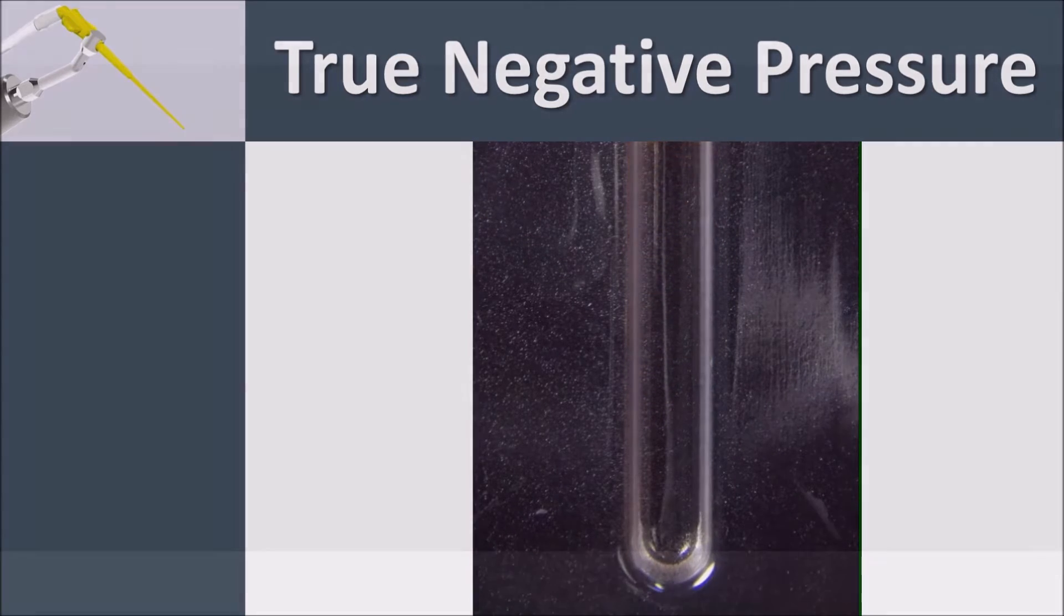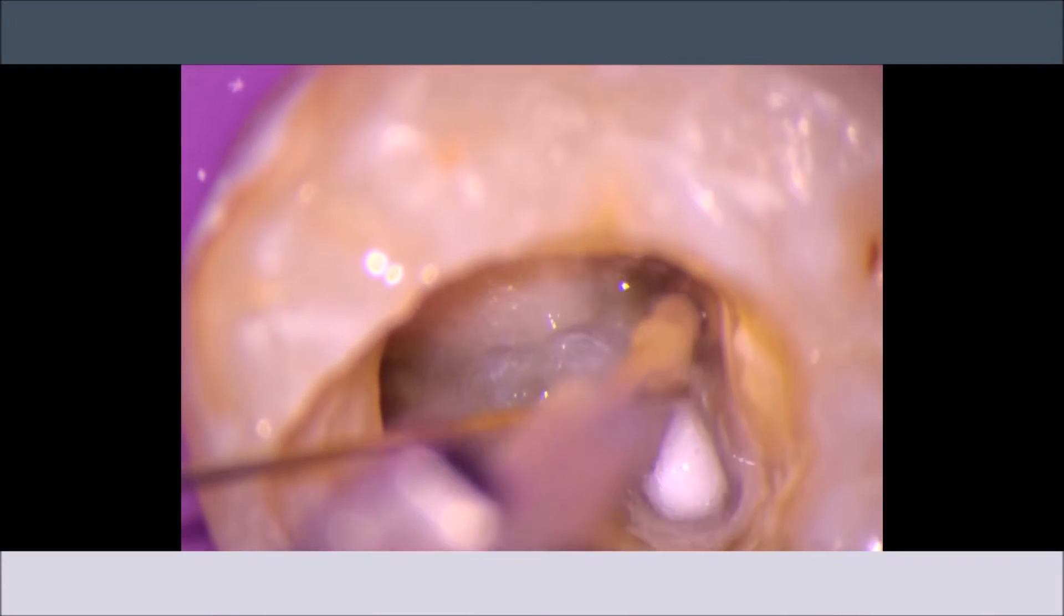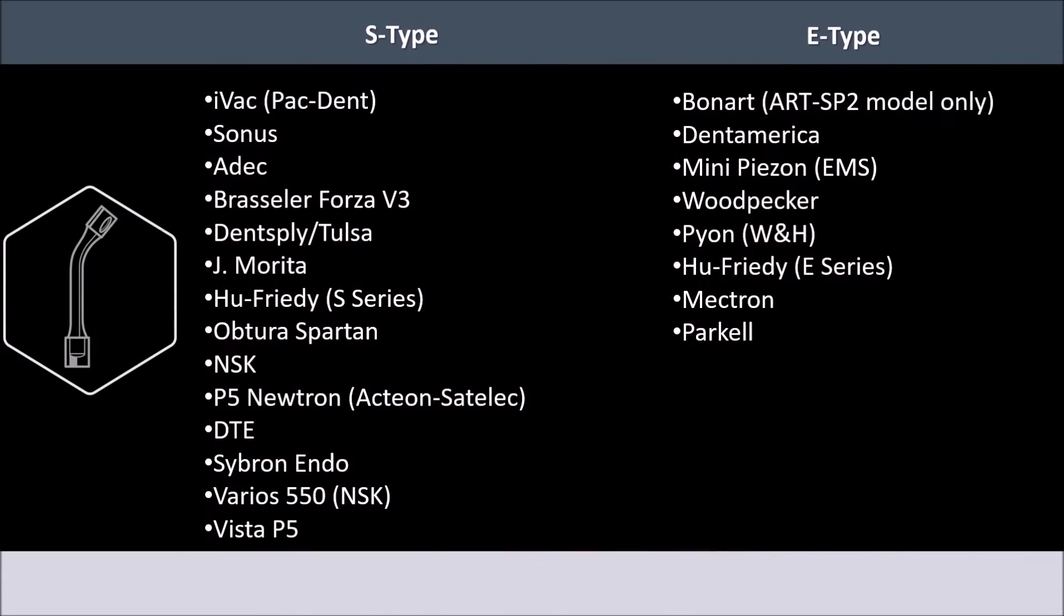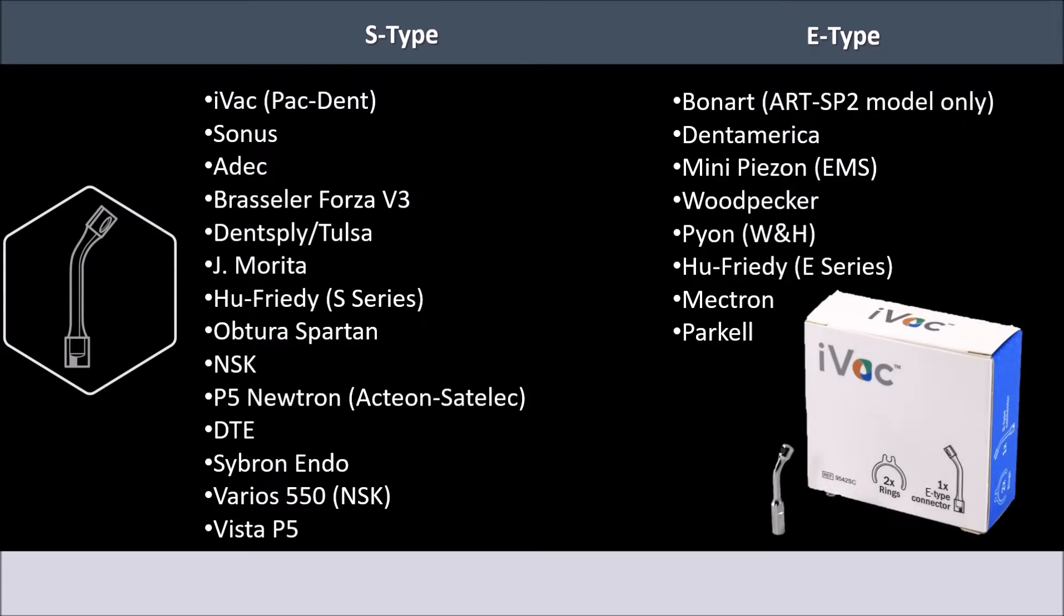If the operator does not have a piezo unit with a reservoir or if the unit is built into the equipment, syringe and cannula irrigation can be used to drip the irrigant in the pulp chamber. The iVac can be used with the two most common types of piezo units: the S-type and the E-type. The S-type connector comes in the intro kit while the E-type connector is offered separately.